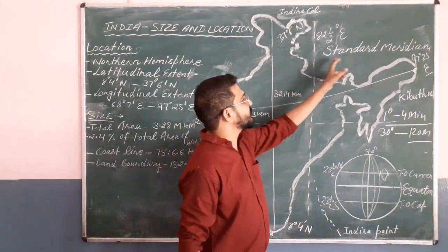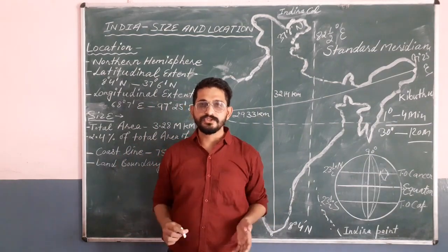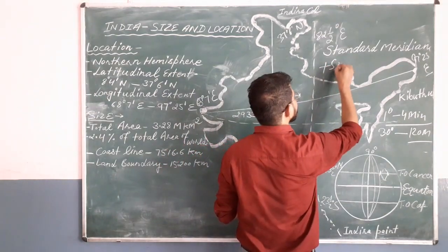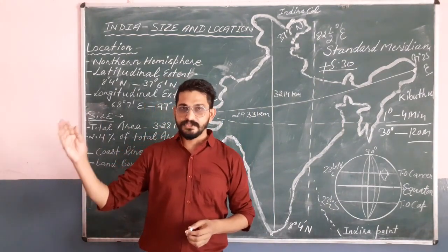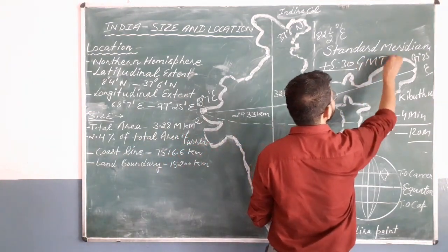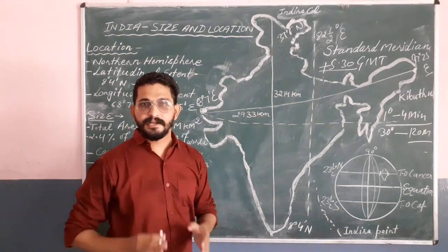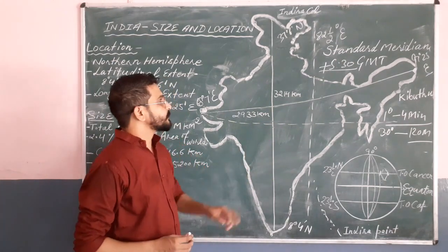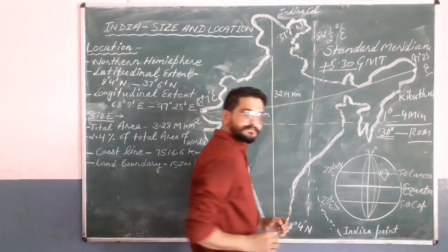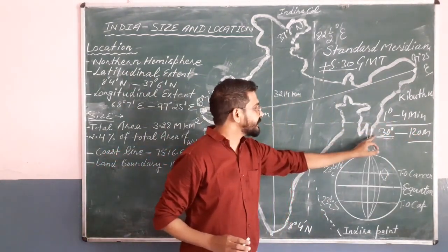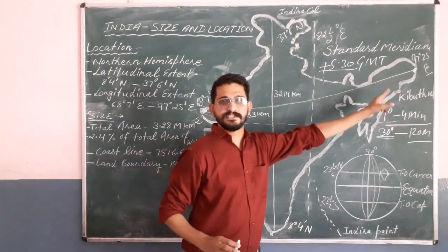Now let's talk about the standard meridian of India and how India sets its time. When we set the time, we add plus 5 hours 30 minutes. Standard time is based on Greenwich Mean Time, which we call GMT. GMT is set at the Prime Meridian, which passes through London, England, and every country sets its time relative to it. In India, Gujarat and Arunachal Pradesh are approximately 30 degrees apart, and since 1 degree equals 4 minutes, 30 degrees equals 120 minutes difference in time.